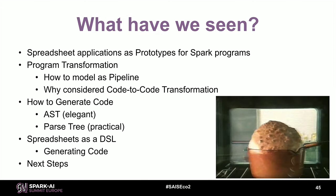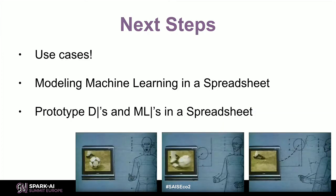What have we seen? We started with modeling or creating prototypes of Spark programs using spreadsheet formulas. We discussed program transformation, specifically code-to-code transformation. We briefly talked about two methods to generate code — one based on an abstract syntax tree, the other based on a parse tree. We showed a couple of demos and briefly discussed spreadsheets as a domain-specific language. As for next steps: we're very interested in use cases — FP&A of course, but anything that can be modeled. Modeling machine learning in a spreadsheet is something we think would be very powerful, and that's something we're working on.